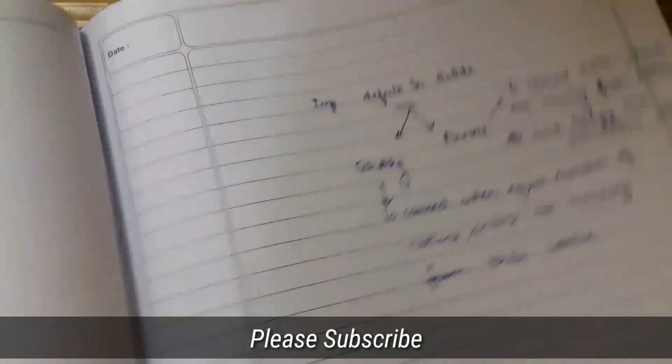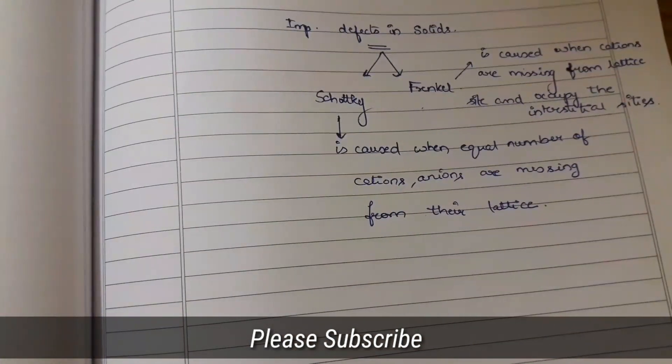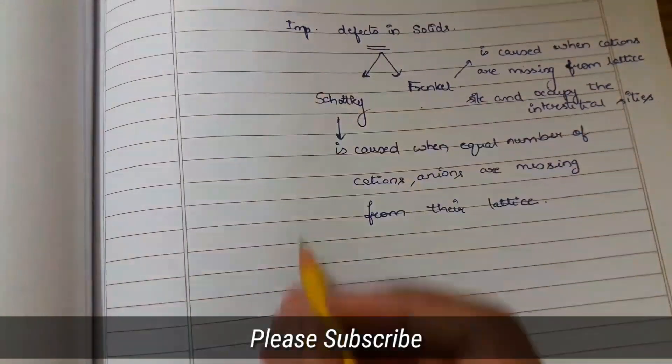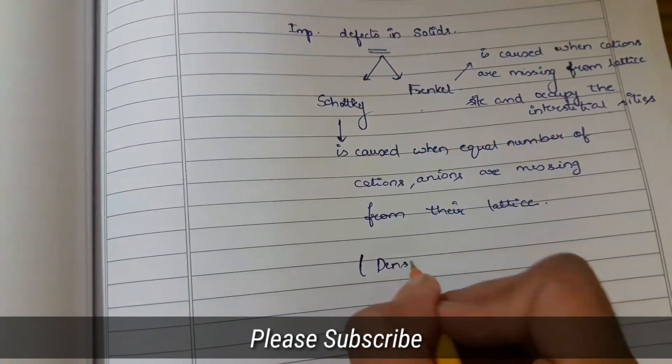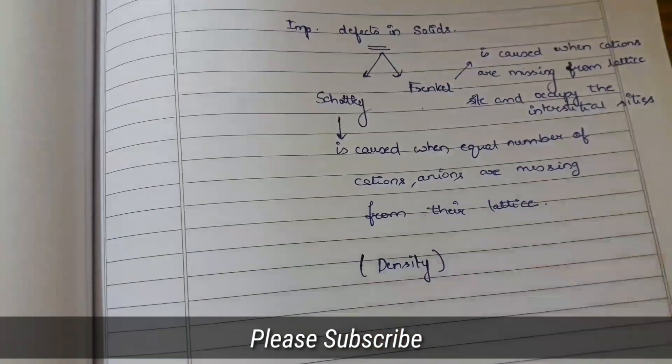One of the important questions which they can ask from this topic is, Short Key Defects low, density came out. Frankel Defects low, density came out.